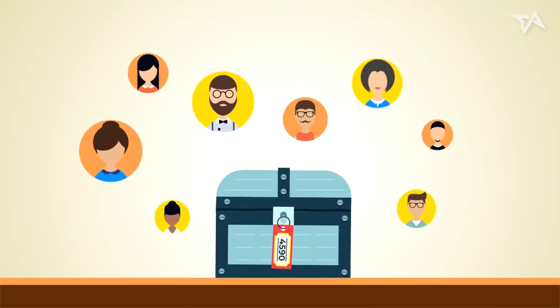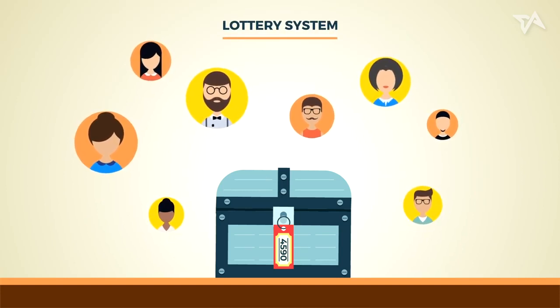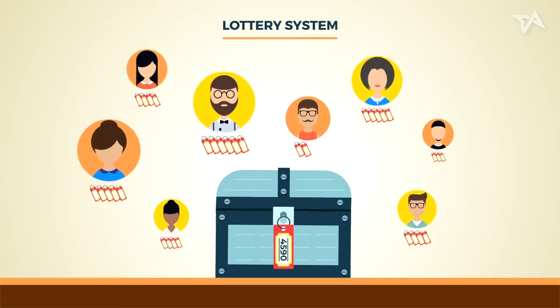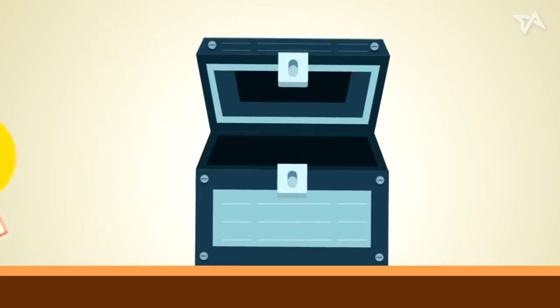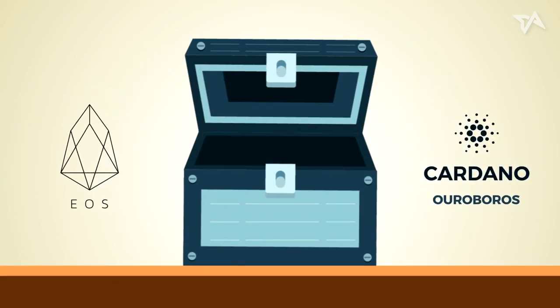Picture a group of treasure hunters vying for a chest. The chest is rewarded based on a lottery system. To participate, each hunter has to buy lottery tickets. The more each hunter buys, the higher the chance of winning. Blockchain protocols like Cardano's Ouroboros and EOS adopt the proof-of-stake consensus.